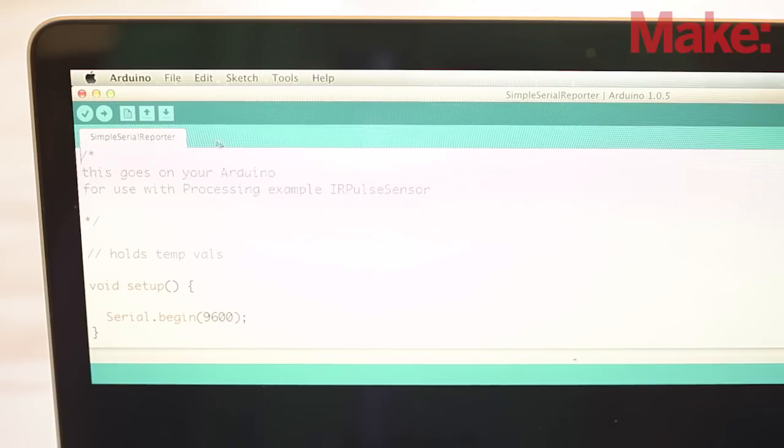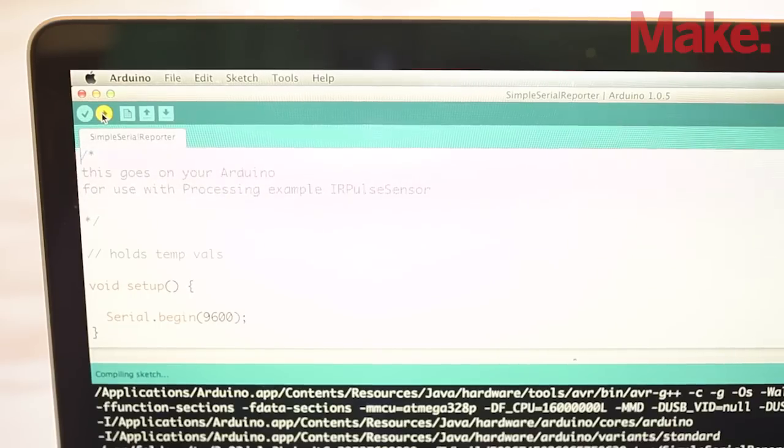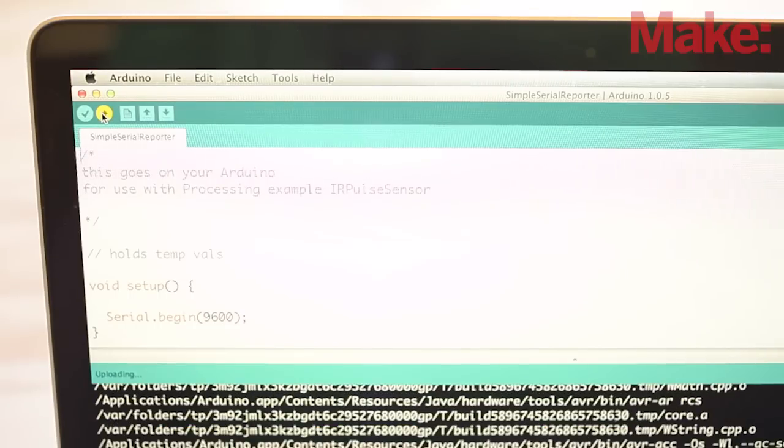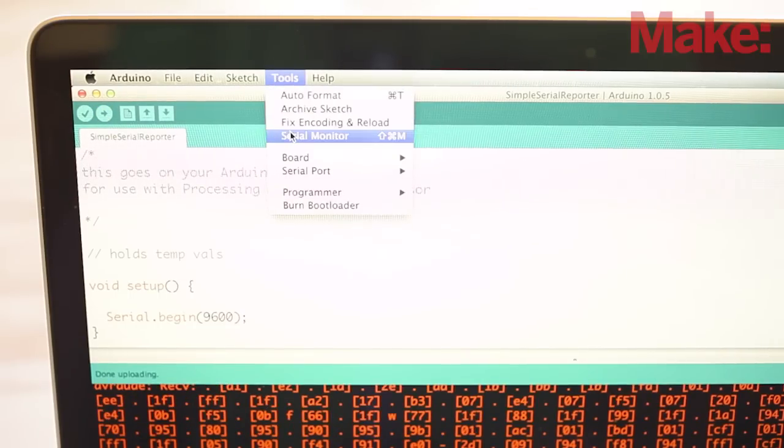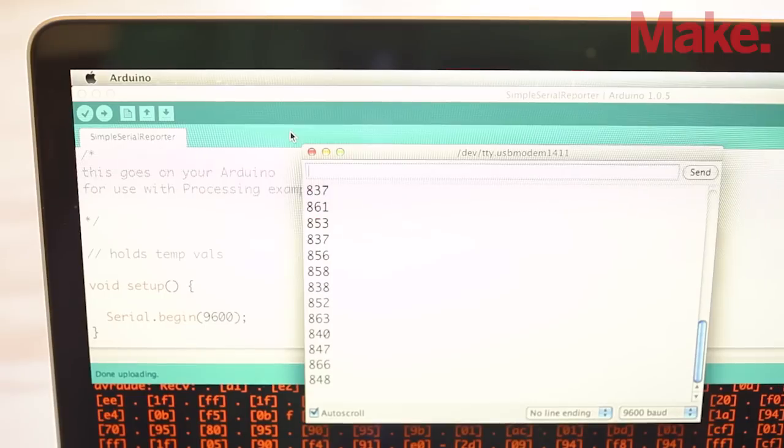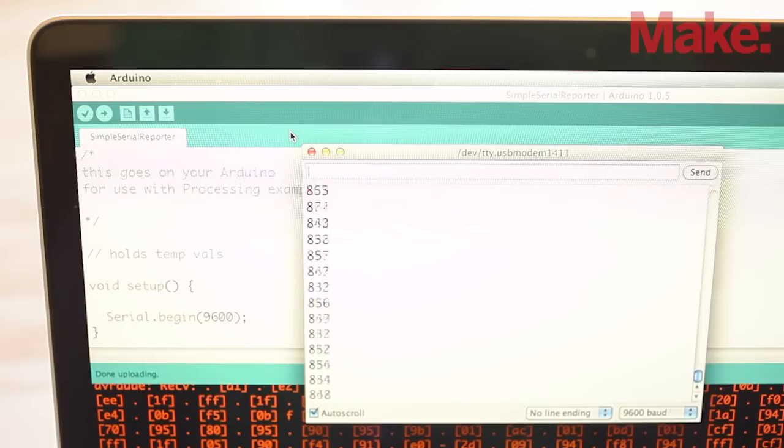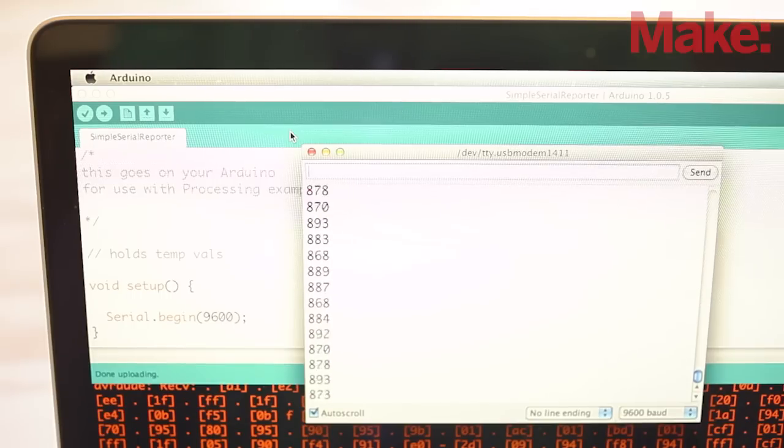Next, open it in the Arduino IDE and click the arrow button to upload the sketch to the Arduino. Now, open the Arduino software serial monitor tool and you should see the raw data streaming from the sensor as a column of numbers. The simple serial reporter sketch reads values from pin A0 and passes them down the USB cable to your computer.